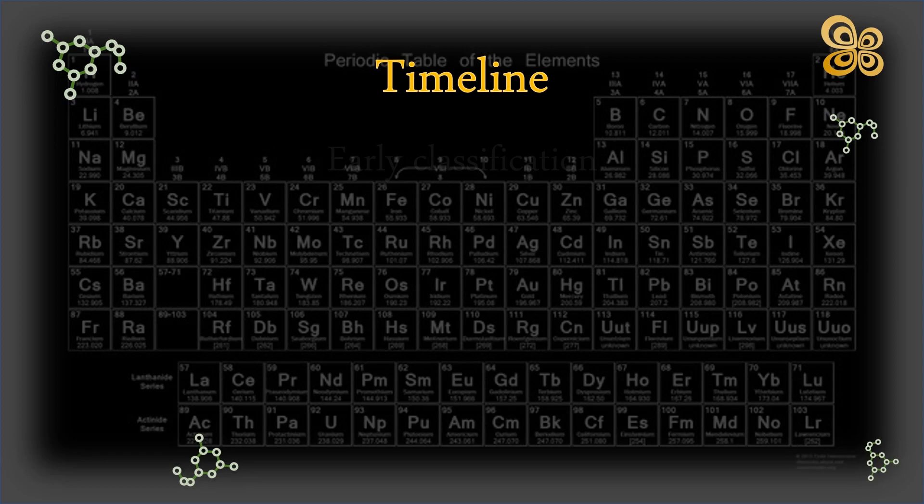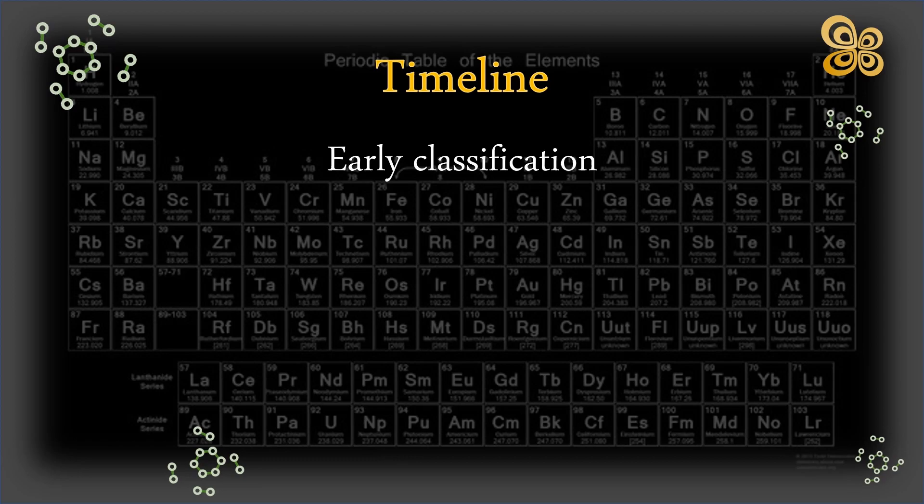Early classification. Chemists started classifying elements into groups depending on their characteristics, such as whether they were metals or non-metals, in the early 1800s.